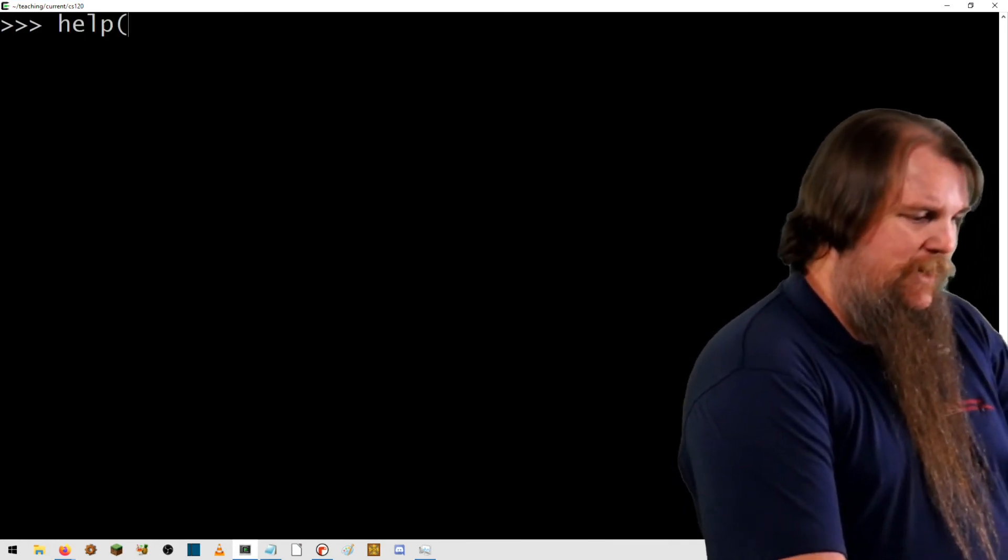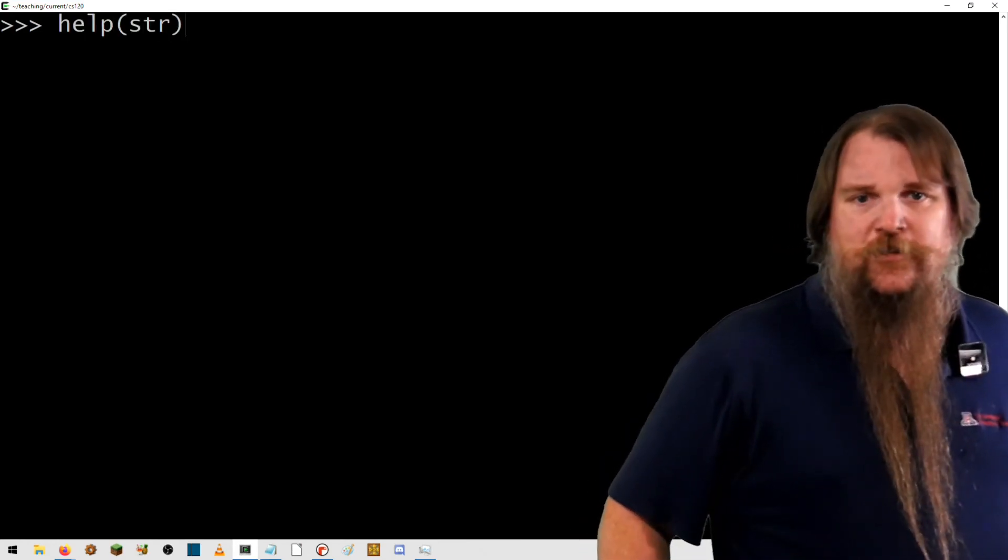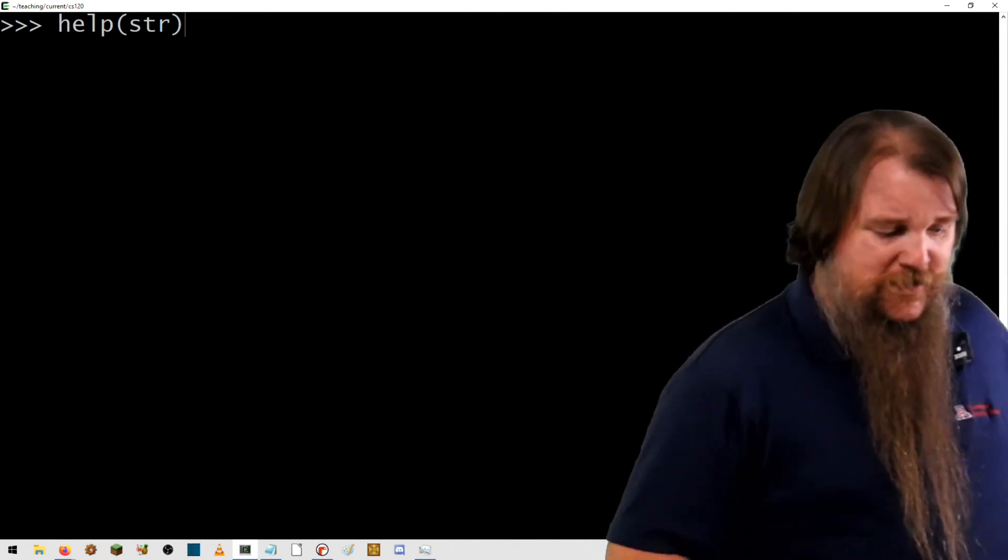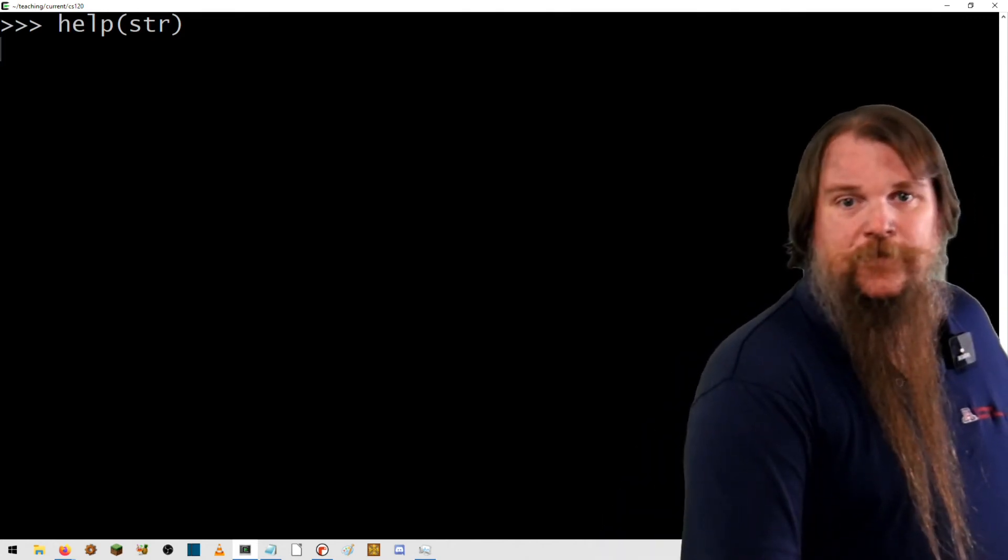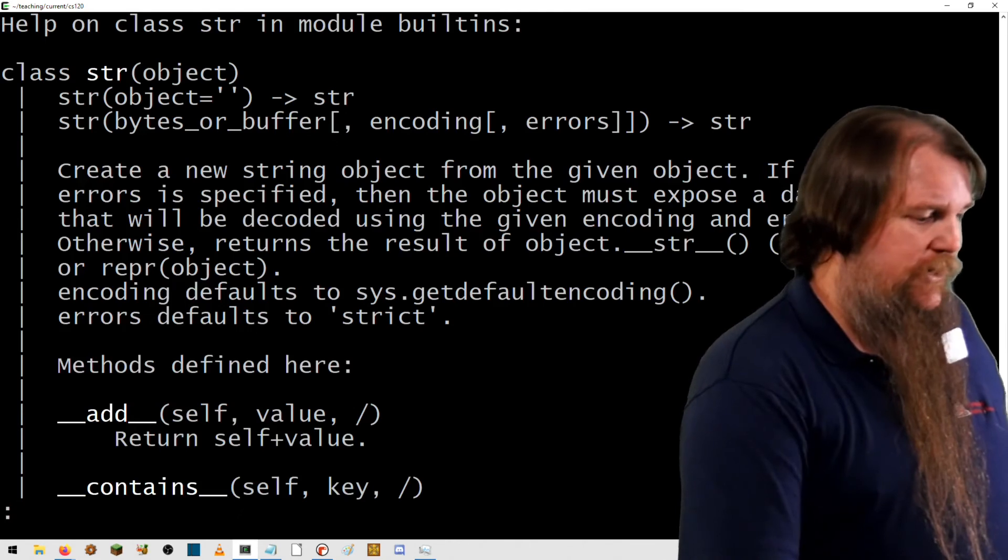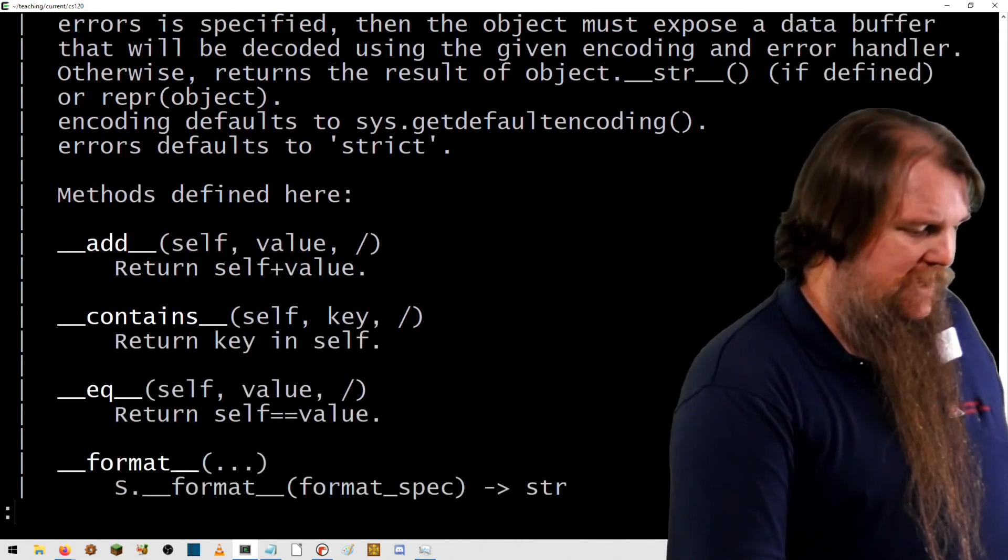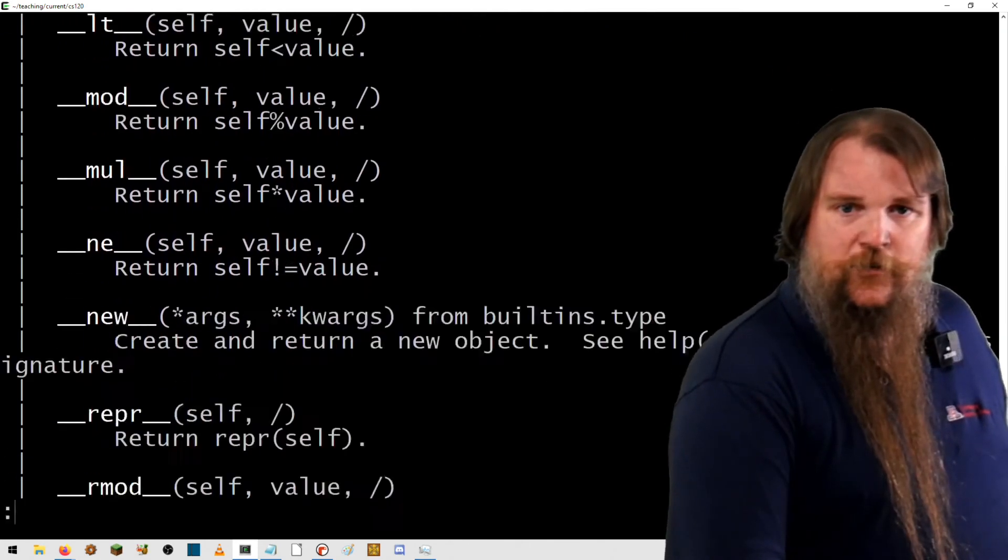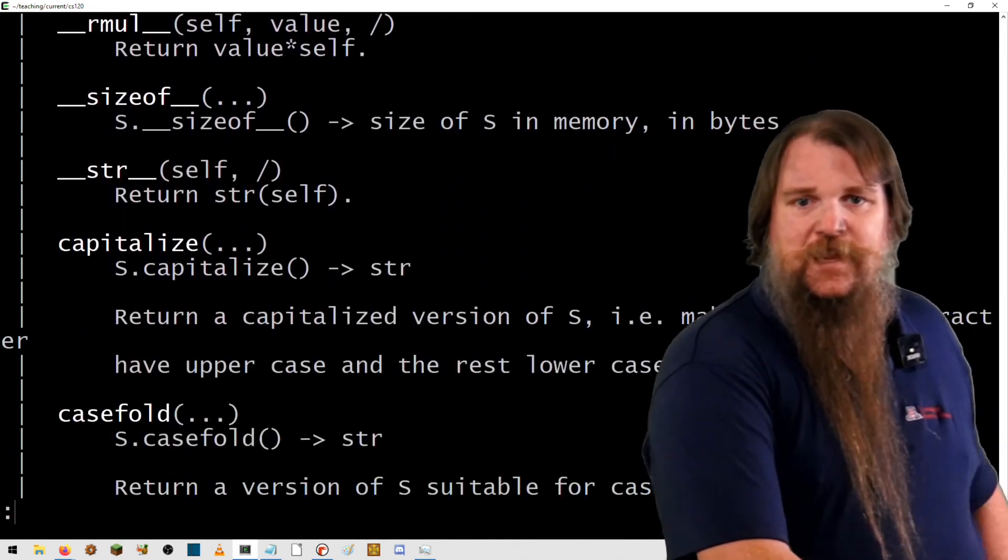The help function is something that you can use when you're inside Python in an interactive shell. You can call help on a function or on a file or on a class and it will print out the doc string. If you want to experiment with that, I would encourage you to do help on STR,